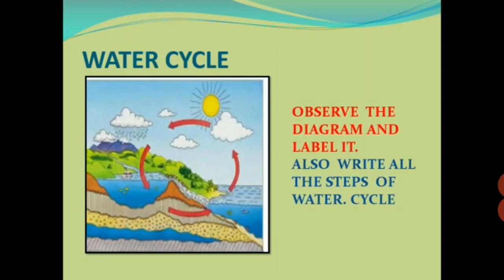You have learnt about the terms evaporation, condensation, and precipitation. A picture is given here. Observe the diagram and label it — label all the things which you can see in the picture. Also write all the steps of the water cycle.